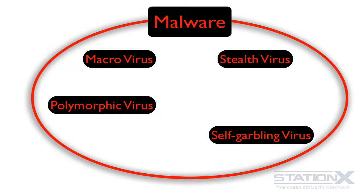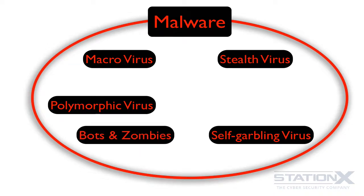You have bots or zombies — that's really a collection of hacked devices under the command and control of a hacker. So if your machine gets compromised, it could be part of a bot network, effectively becoming a zombie. You also have worms, which are viruses that simply spread from one machine to another to another.